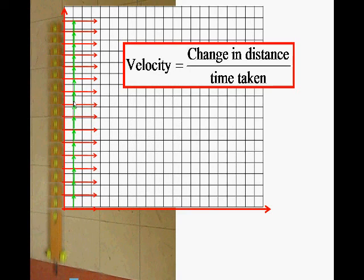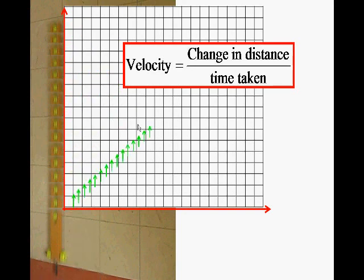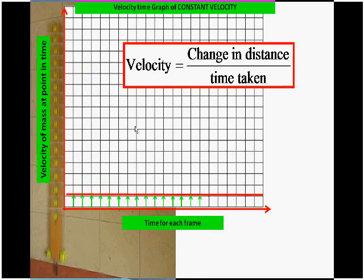So now the green line represents the velocity, and I can line up the green lines again along the bottom. And again we have, we get a velocity time graph. This time though, because the velocity hasn't changed in each of the frames,